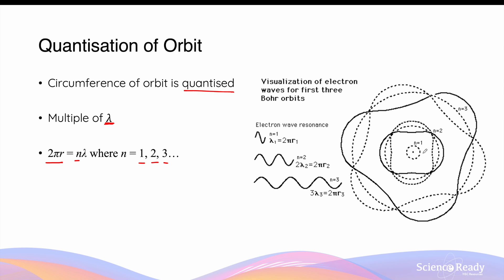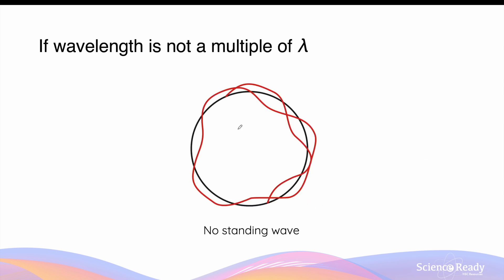N equals 1 corresponds to the first orbit, where the circumference 2πr₁ equals exactly 1 multiple of the wavelength of the electron. The second orbit corresponds to N equals 2, meaning 2πr₂ equals 2 multiples of the wavelength. The third orbit, N equals 3, is 3 multiples of the wavelength. It is important for there to be an integral multiple of a wavelength in the orbit, because otherwise the interference of the electron waves will not result in a standing wave, as shown by this diagram.